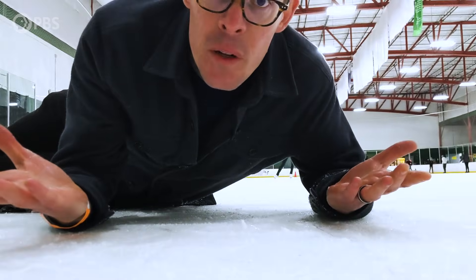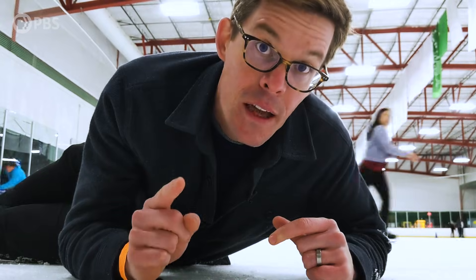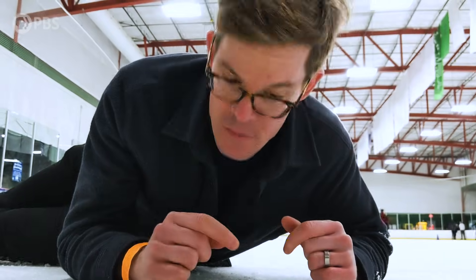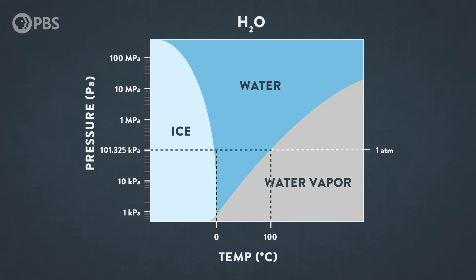But I don't see a layer of liquid water. Maybe something has to create it. This is what's called a phase diagram, and this one is for water. For a particular temperature and pressure, it tells you which phase — solid, liquid, or gas — the substance will be in. Looking at the diagram, we see water at minus five degrees Celsius and one atmosphere of pressure, like your typical ice rink, will be solid ice.